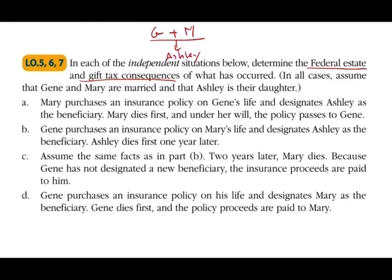I can give you this information or I can give you a family tree in an exhibit. Mary purchased an insurance policy on Jean's life and designated Ashley as the beneficiary. Mary dies first, and under her will the policy passes to Jean. I can show you the insurance policy or the death certificate — it's the same information given in a different format.